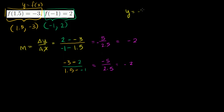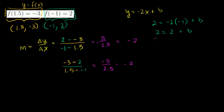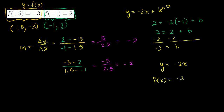We know the equation is y = -2x + b. Using the point (-1, 2): 2 = -2(-1) + b, so 2 = 2 + b. Subtracting 2 from both sides, b = 0. So the equation is y = -2x. In function notation: f(x) = -2x.